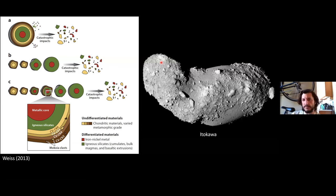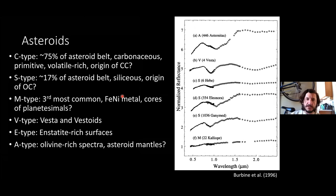These materials are basically rubble piles now — here's the asteroid Itokawa. Remote sensing tells us that the majority of the asteroid belt is C-type asteroids, which are carbonaceous, primitive, and volatile-rich, potentially the origin of carbonaceous chondrites — about 75% of the asteroid belt's mass.